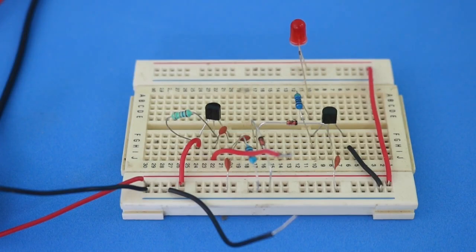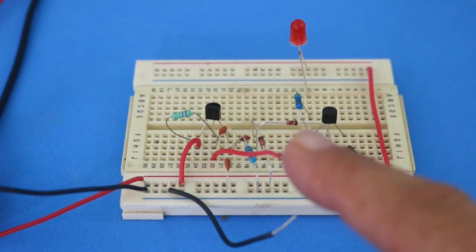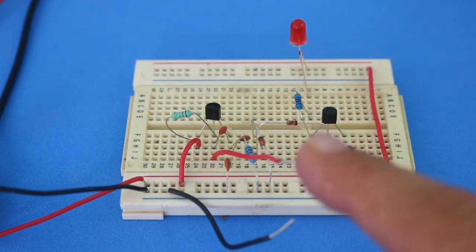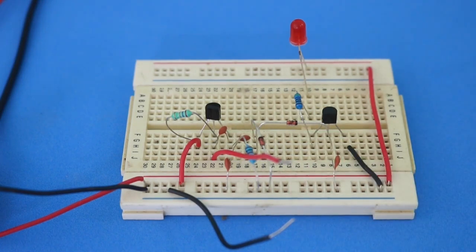So here is the circuit on breadboard. The crystal under test will be connected at these two points. And if the crystal is good, our LED will turn on.